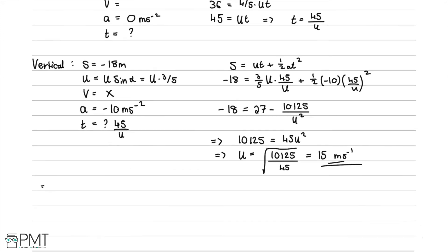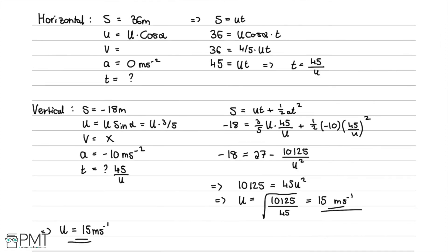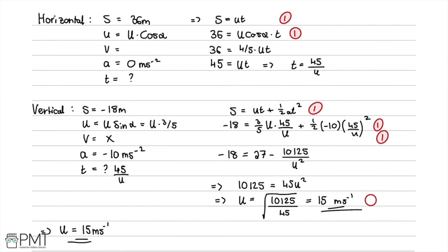Therefore u equals 15 meters per second. Reviewing the marks: the first mark was for using s equals ut for the horizontal component; the second for correctly substituting values with horizontal displacement 36 and initial velocity u cos alpha; the third for using s equals ut plus one half at squared; the fourth for correct substitution of values; the fifth for substituting t equals 45 over u; and the sixth for the correct final answer.